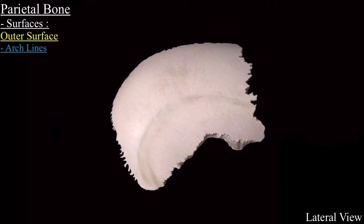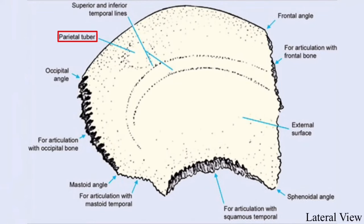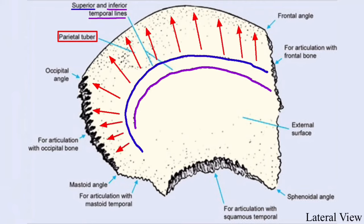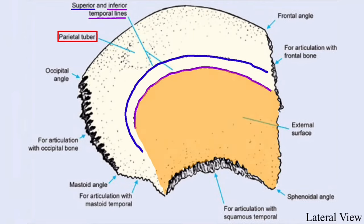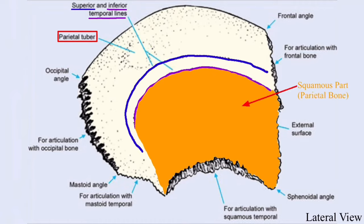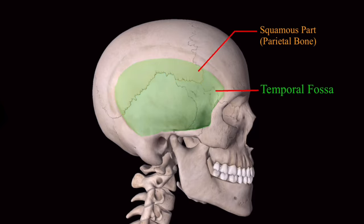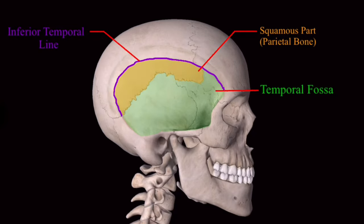Next are the two arc lines. Below the parietal tuber are present two arc lines: the superior temporal line and the inferior temporal line. The convexities of these two lines face upward. The area below the inferior temporal line is the squamous part of the parietal bone, which is the contribution of the parietal bone to the temporal fossa.